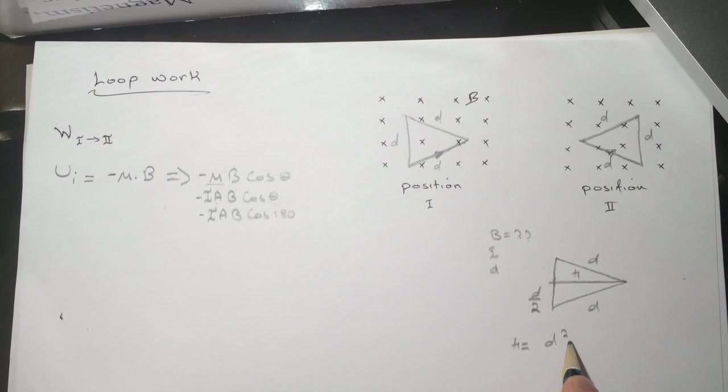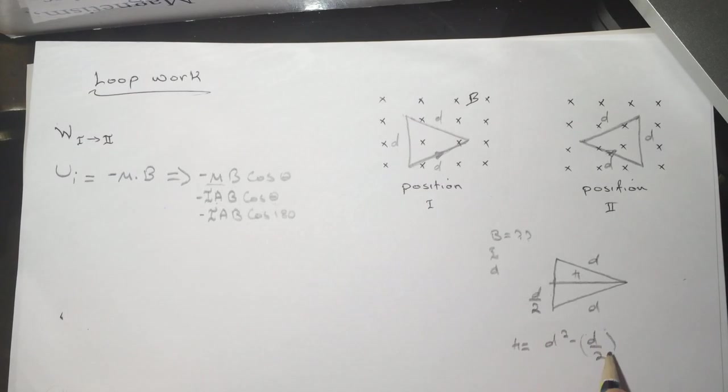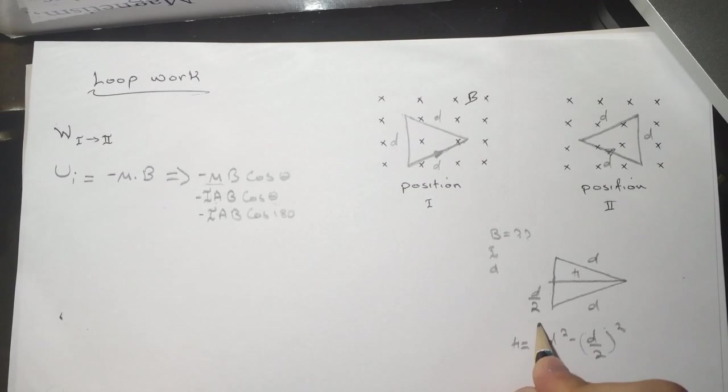So H is equal to the square root of D squared minus D over 2 squared.